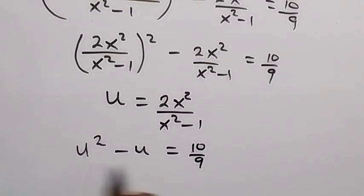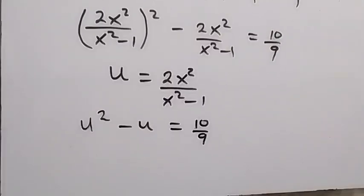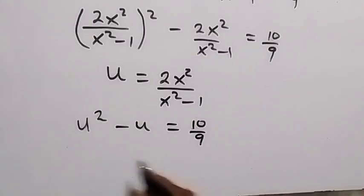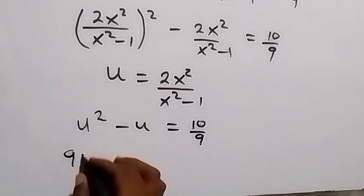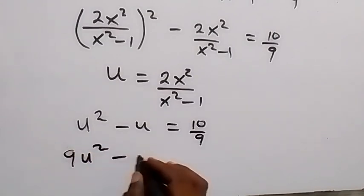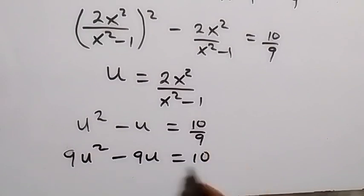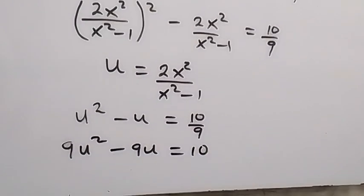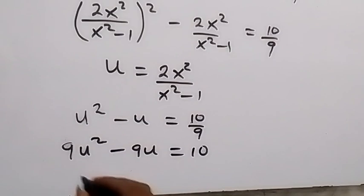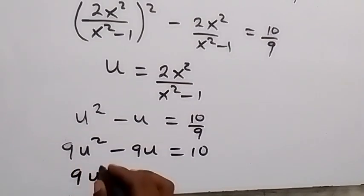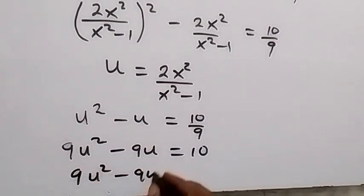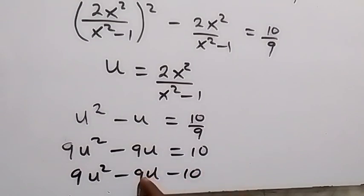When we multiply through by 9, it becomes 9u² - 9u = 10. Bringing 10 to this side to form a quadratic equation, this becomes 9u² - 9u - 10 = 0.